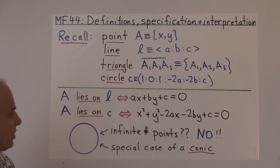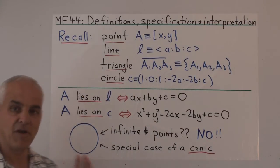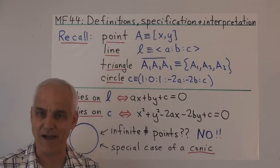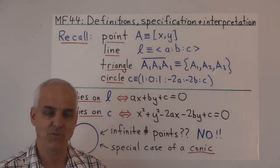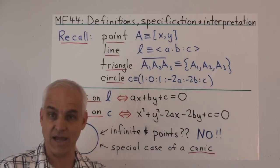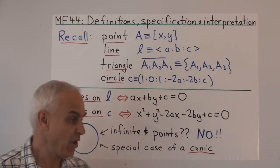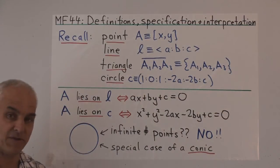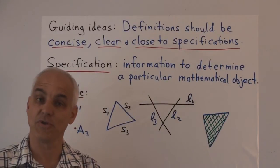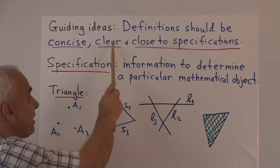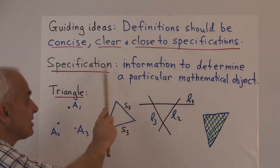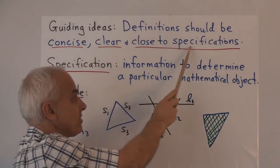So we made these definitions, and they're quite different from the usual definitions that one finds in geometry texts. We did not define a line as an infinite set of points. We did not define a circle as an infinite set of points. So a useful guiding idea is that mathematical definitions should be concise, clear, and close to specifications.